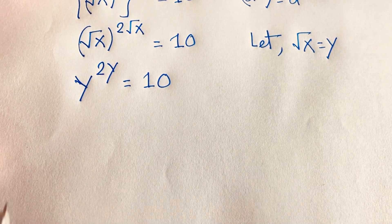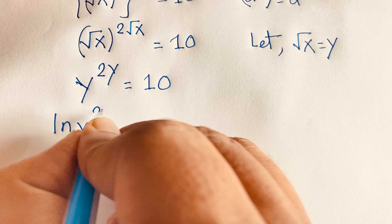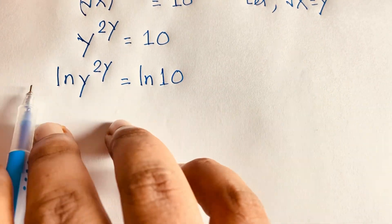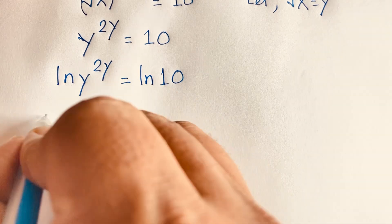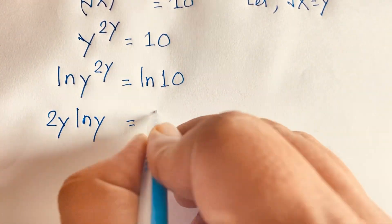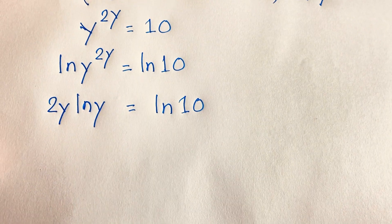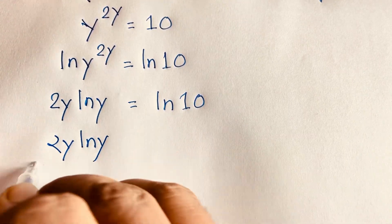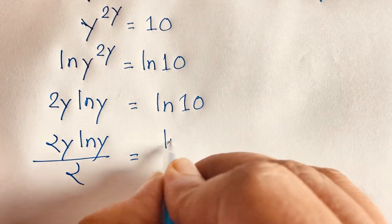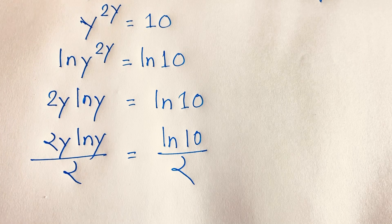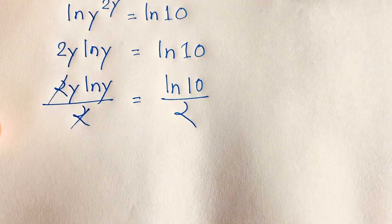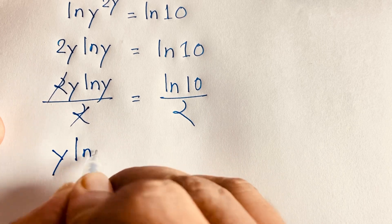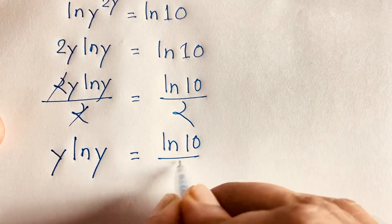I apply natural log to both sides: ln(y^(2y)) is equal to ln(10). Then, bringing the exponent in front using log rules: 2y·ln(y) is equal to ln(10). Dividing both sides by 2, we find y·ln(y) is equal to ln(10)/2.